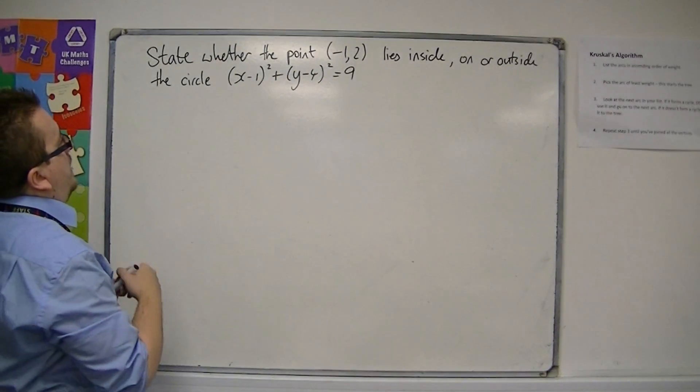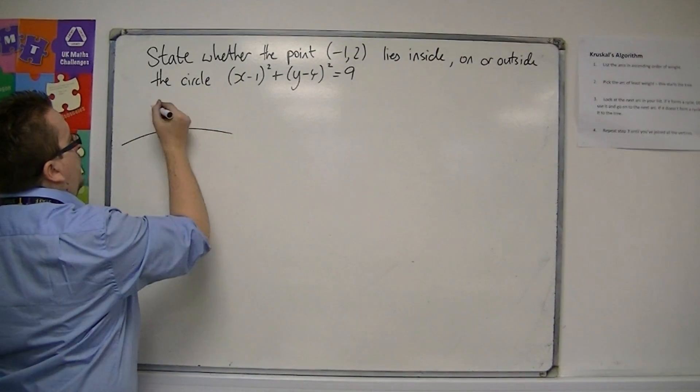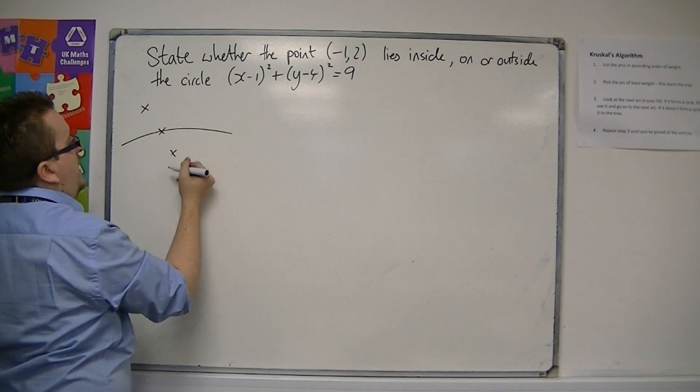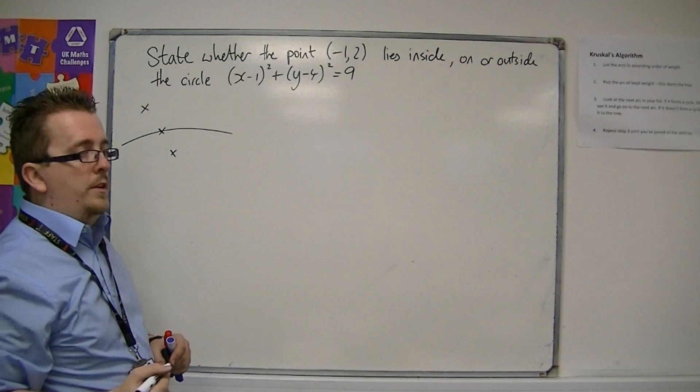Now, what you have here is this point (-1, 2). It could be outside, it could be on, or it could be inside the circle.